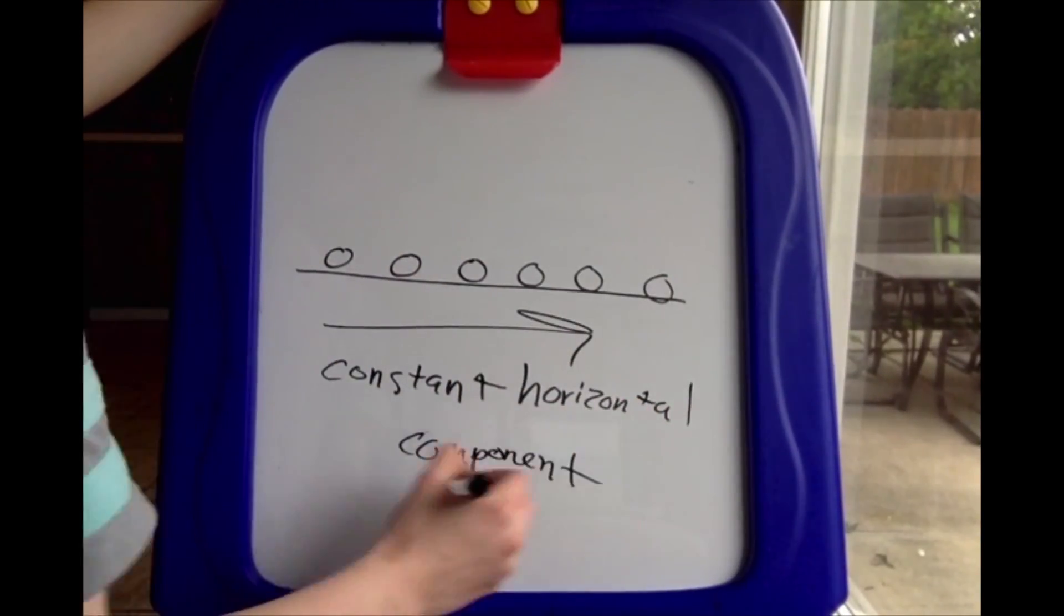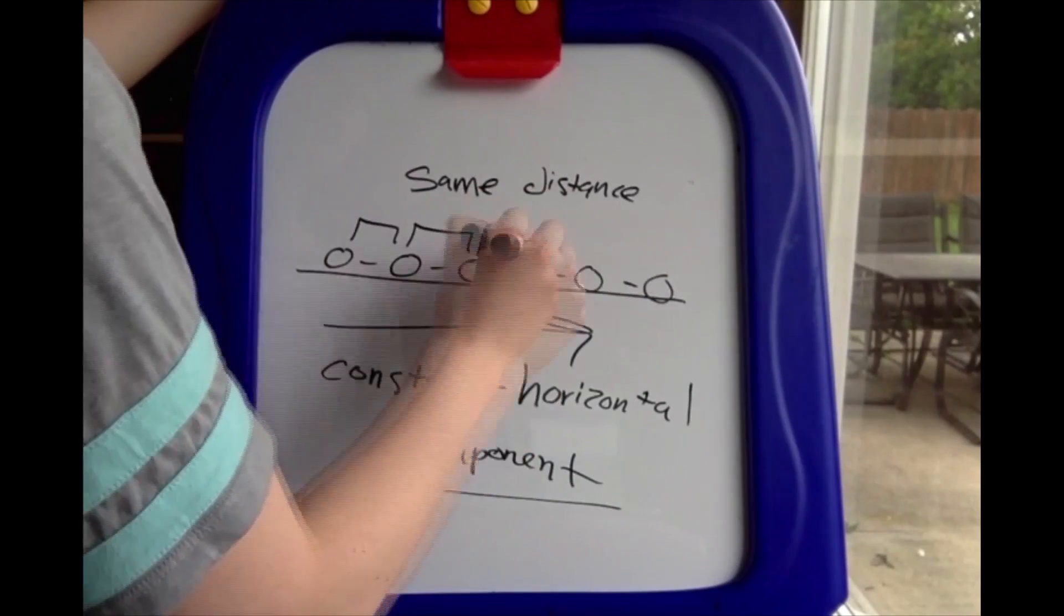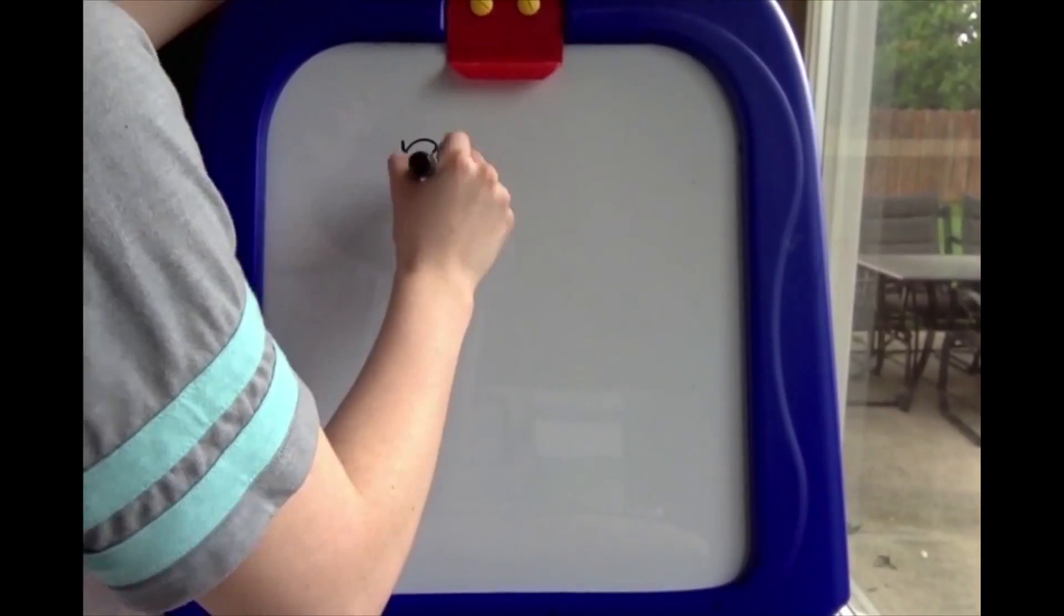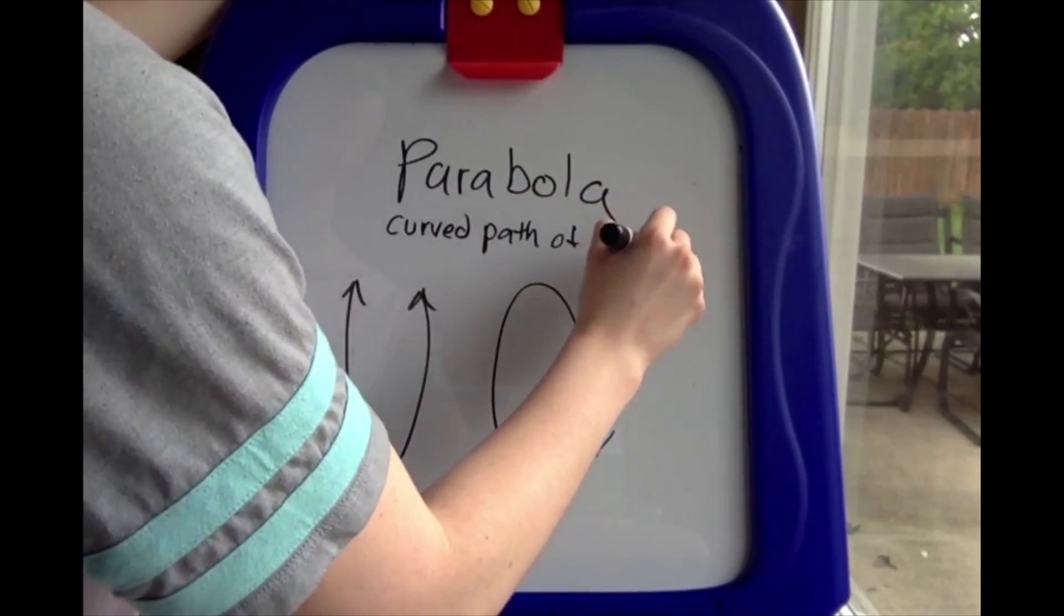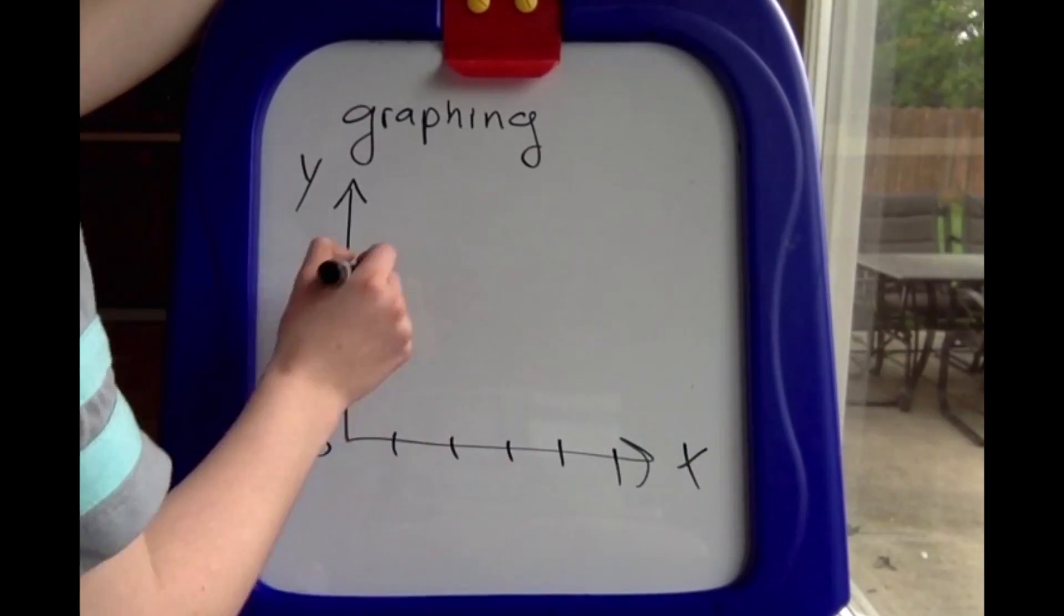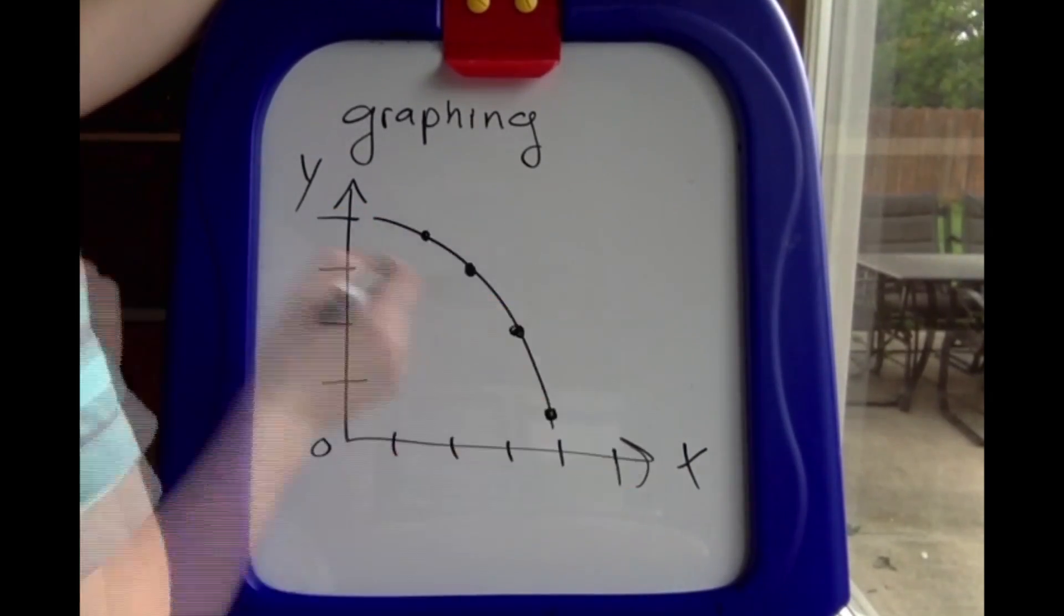Once dropped, the object will continue in motion by its own inertia and is influenced only by the downward force of gravity. By doing this, it then will create a curved path of a projectile called a parabola. Commonly related to mathematical graphing, here's what a projectile path of motion would look like.